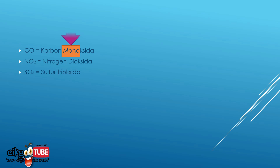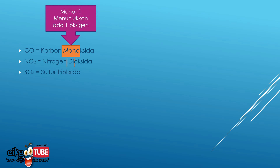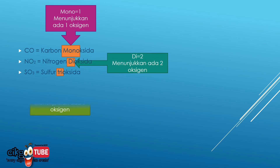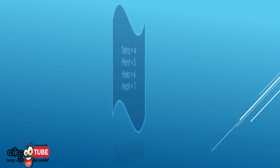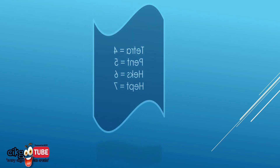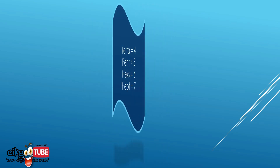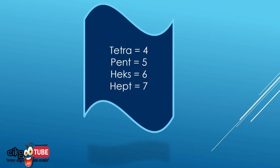Awalan pada unsur yang kedua: mono, di, dan tri — itu adalah menunjukkan bilangan oksigen. Mono = 1, di = 2, tri = 3. Jikalau lebih daripada 3, kita boleh letakkan tetra = 4, penta = 5, heksa = 6, hepta = 7.